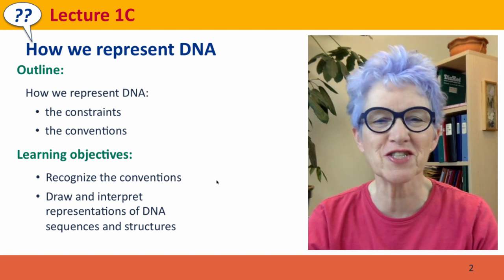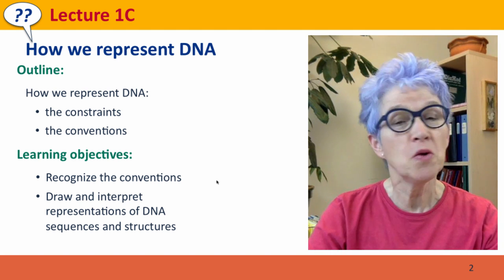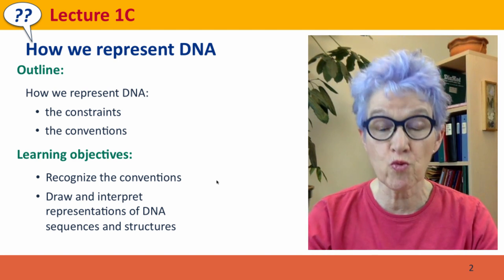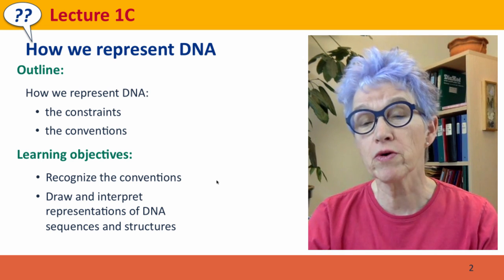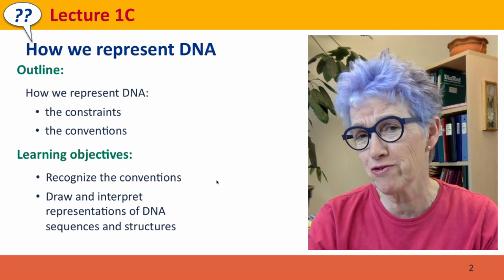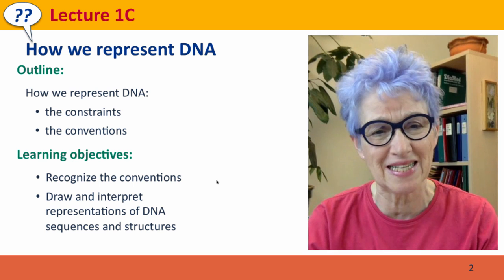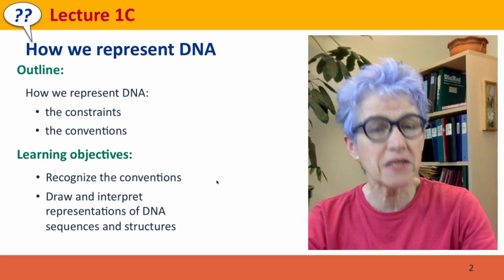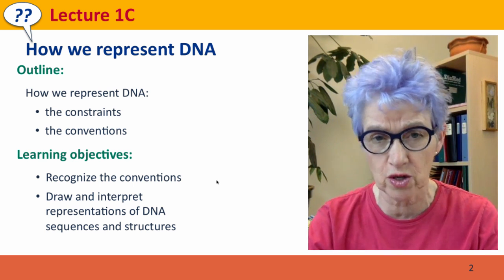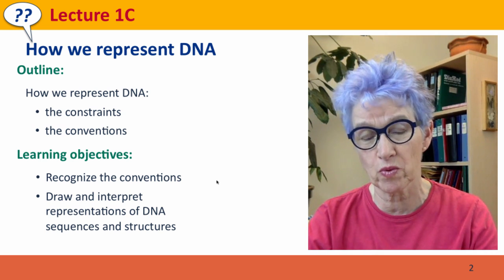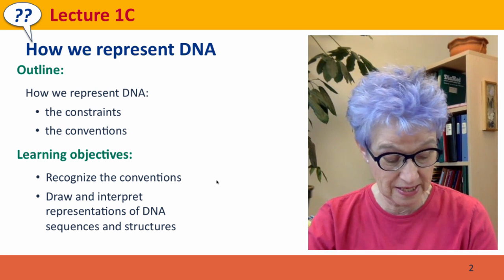Hi, everyone. Welcome back to Useful Genetics. This is Lecture 1C. We're going to be talking about how we represent DNA. Representation is really important for DNA because we can't actually see it. And this means we're very dependent on having conventions that everyone agrees on where we know what we're talking about when we draw something to represent DNA.